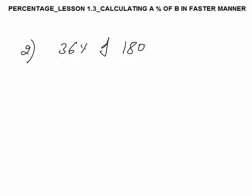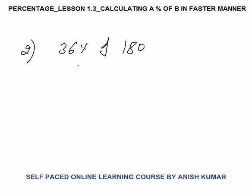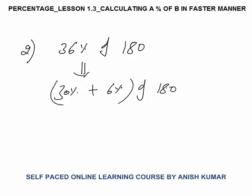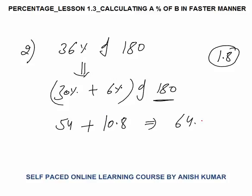Now the second question is 36 percent of 180. We will break this as 30 percent plus 6 percent of 180. Now 10 percent of 180 would be 18, so 30 percent would be 3 times: 18 into 3 is 54 straight away. Now 1 percent of 180 is 1.8. 6 percent would be 6 times — 1.8 into 6. You must know the table: 18 into 6 is 108, so 1.8 into 6 would be 10.8. So the answer would be 64.8.